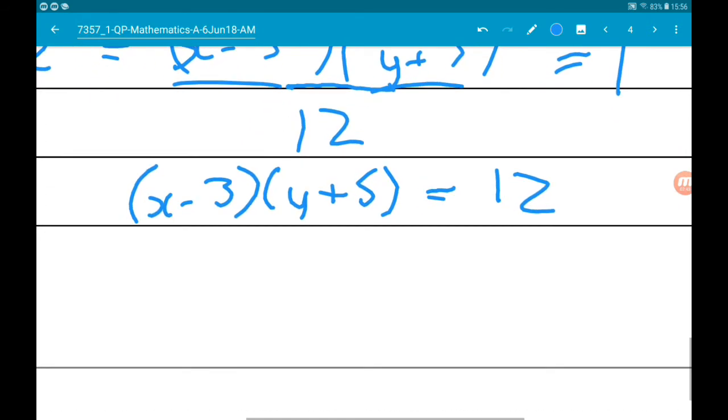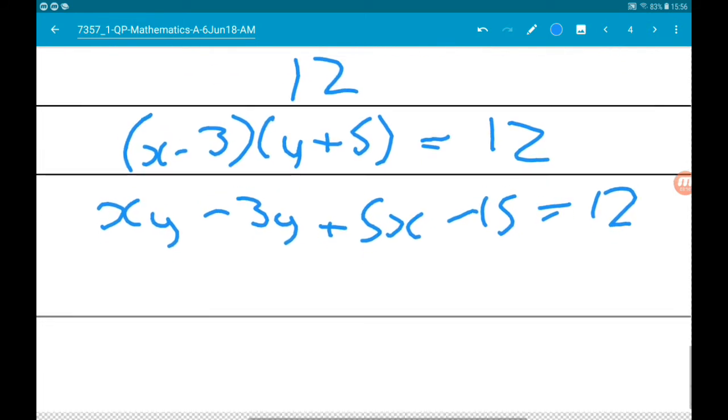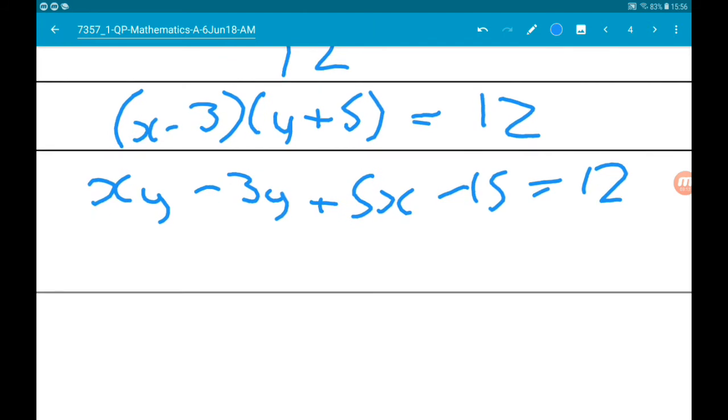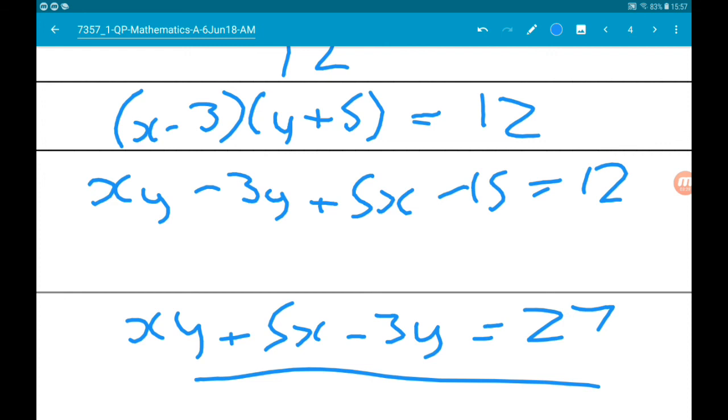Expanding the brackets gives us xy. Now we're going to get minus 3y and 5x. 5x minus 3 times 5 is minus 15. That's all equal to 12. Now if we add 15 and rearrange a tiny bit, we've got xy add 5x minus 3y is equal to 27, which is in the form that we want.